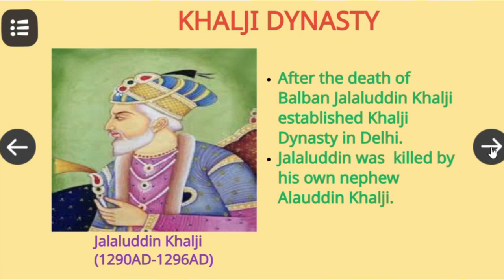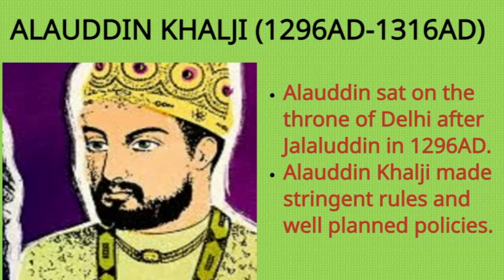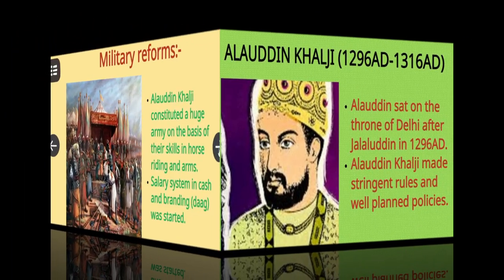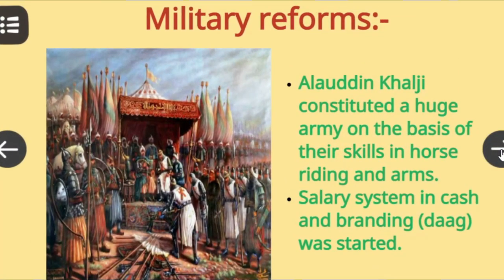Alauddin Khilji sat on the throne of Delhi in 1296 AD. When Alauddin became Sultan, there was a lot of mismanagement in the Delhi Sultanate, so he made stringent rules and well-planned policies, such as military reforms.